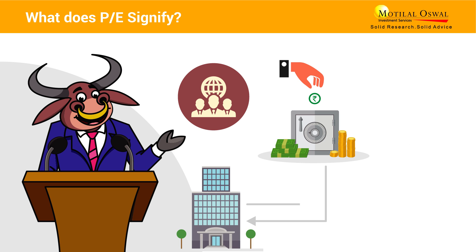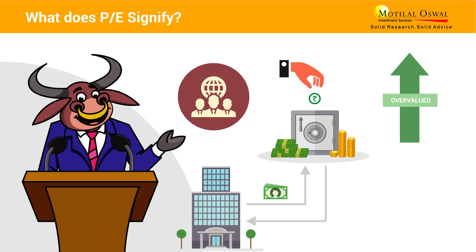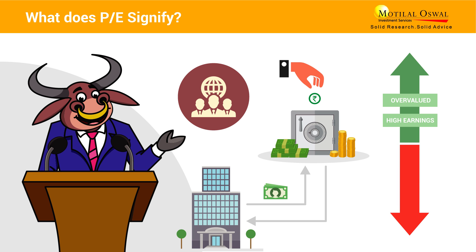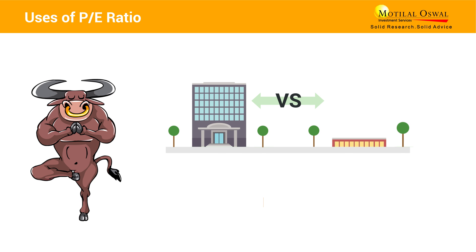The PE ratio indicates the amount an investor is ready to pay for each rupee of that company's earnings. A high PE ratio suggests that the stock is overvalued and investors are expecting higher returns in the future. A low PE ratio can indicate either that a company may be undervalued or that the company's performance is poor.